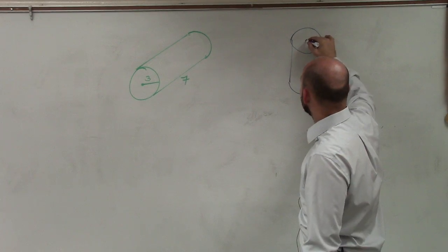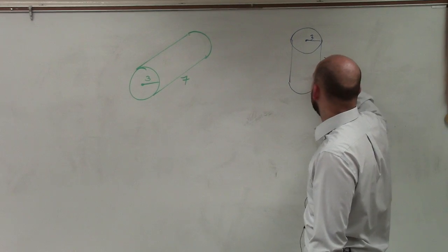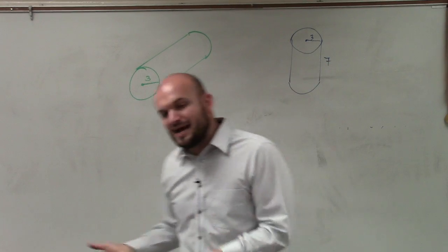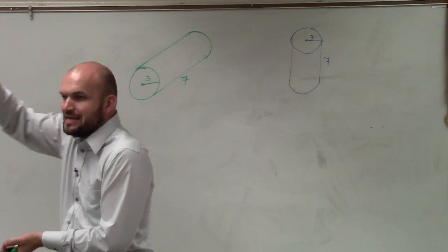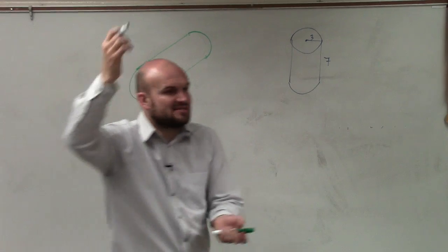Now, we did say that the radius is 3 and the height is 7. So again, what we talked about is, remember, when we're dealing with prisms, the base is the same as the top.